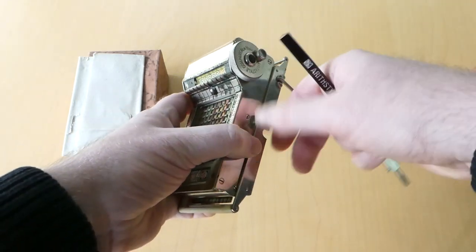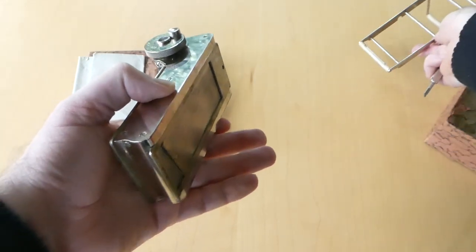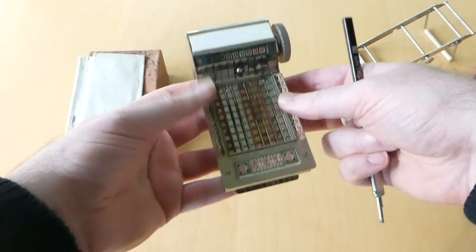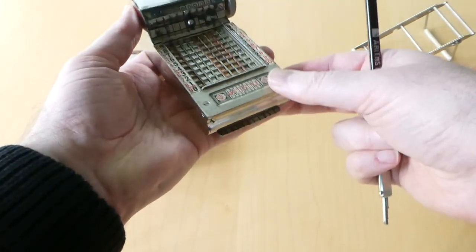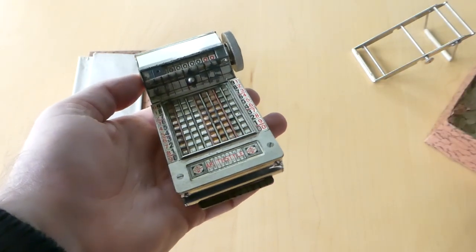This stand can easily be removed. It's just clamped onto the bottom of the machine, and that allows you to use this on your ledger book as well, because the columns are the same width as the columns in standard ledger books.